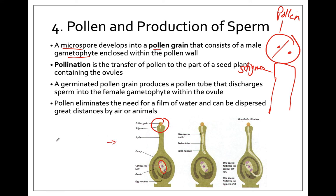In angiosperms — flowering plants — one of the cells called the tube cell creates a long pollen tube that develops all the way to the ovule, and then the two sperm nuclei travel down the tube to fertilize. In seed plants — gymnosperms and angiosperms — sperm no longer need water; they are not flagellated because they travel through this tiny tube inside the female parent sporophyte. Pollen can be dispersed by animals over great distances or float on air.